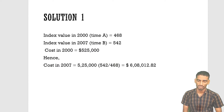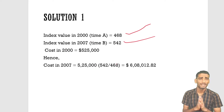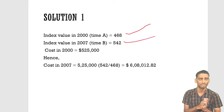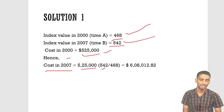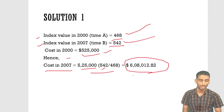For the solution: index value in 2000 (time A) = 468; index value in 2007 (time B) = 542; cost in 2000 = $525,000. Therefore, cost in 2007 = cost in 2000 × (index at time B / index at time A). After applying the cost index model formula and doing the calculation, you get the cost in 2007.